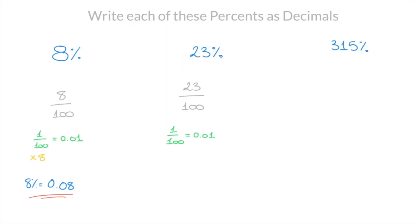23% or 23 hundredths will equal 23 times 0.01. And that leads us to 23% equals 0.23. And that's the answer.